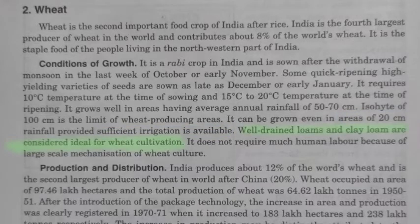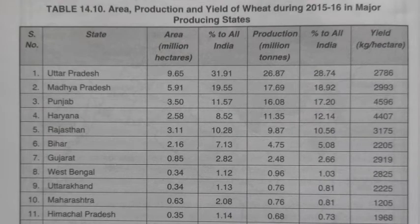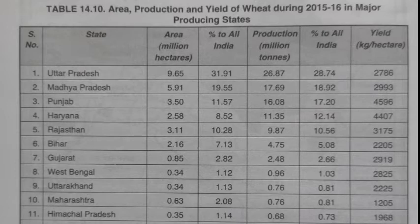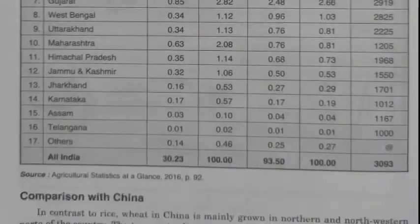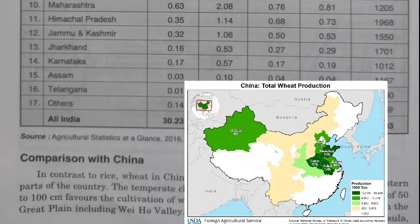In this table, the major wheat-producing states of India are ranked. Uttar Pradesh is the largest producer of wheat in total production. However, in terms of yield per hectare, Punjab ranks first with 4596 kg per hectare, while Uttar Pradesh produces 2786 kg per hectare.